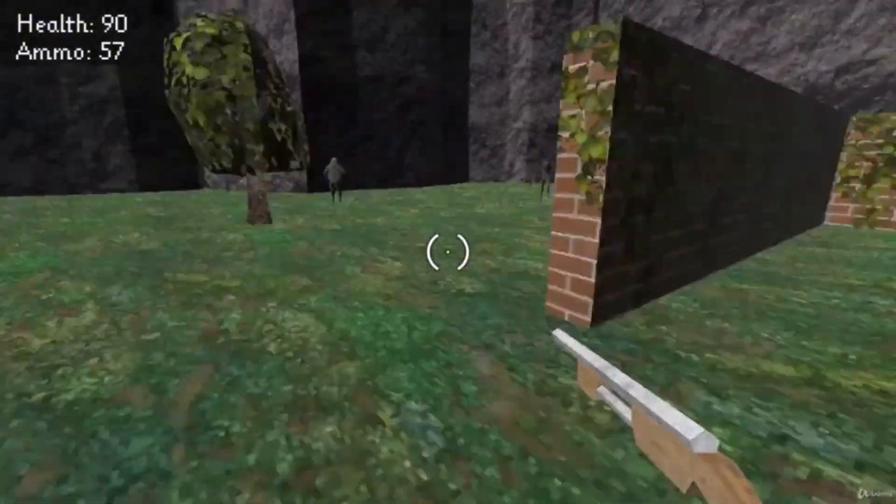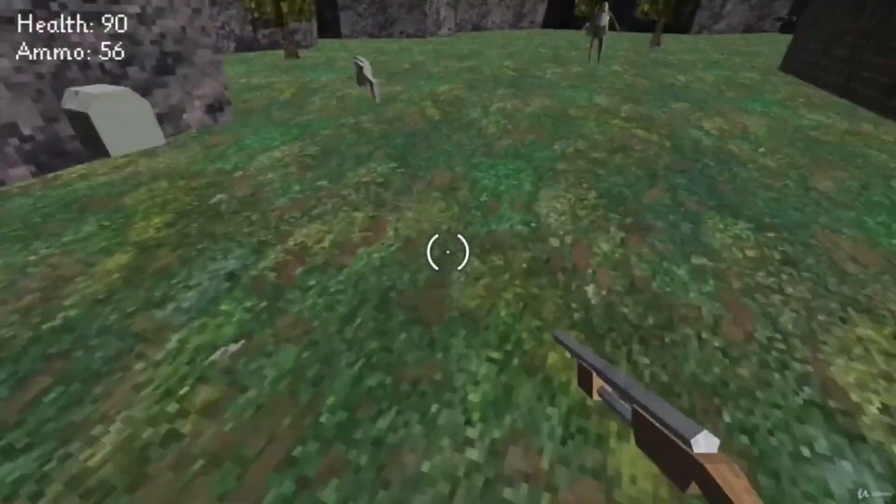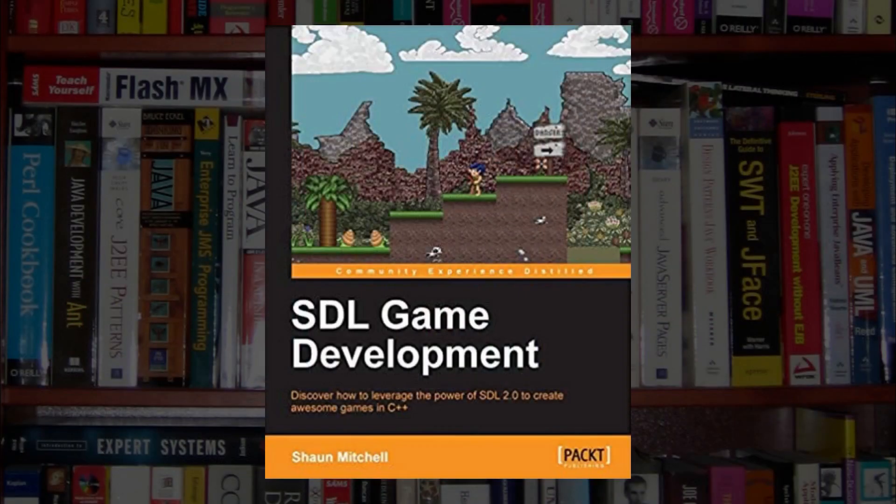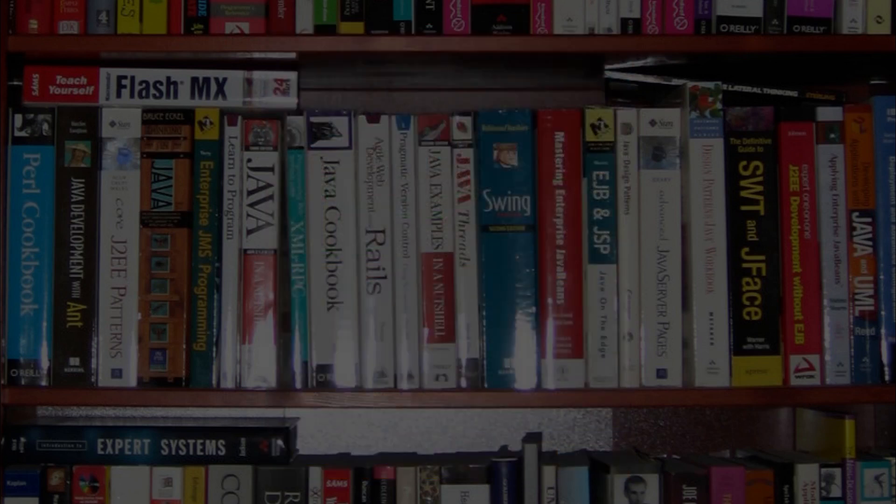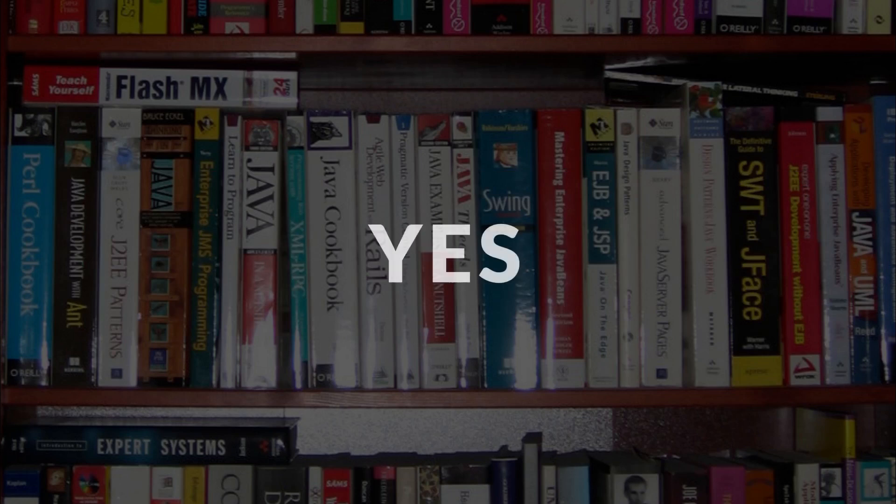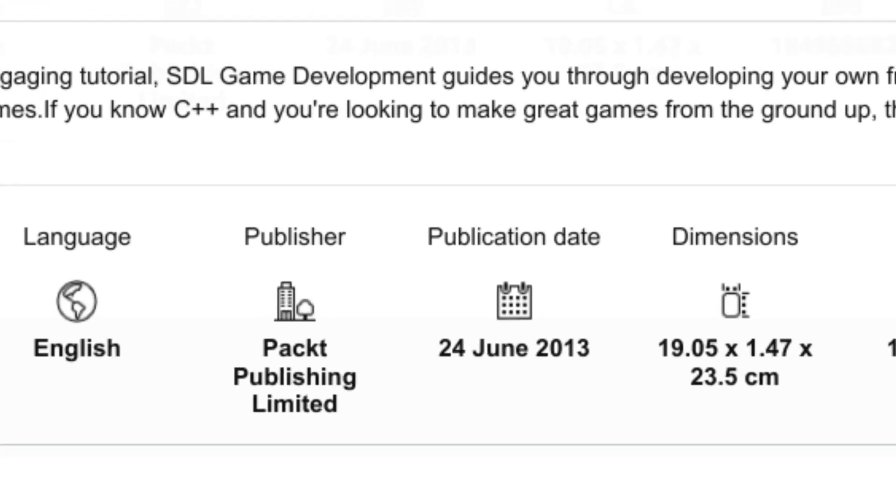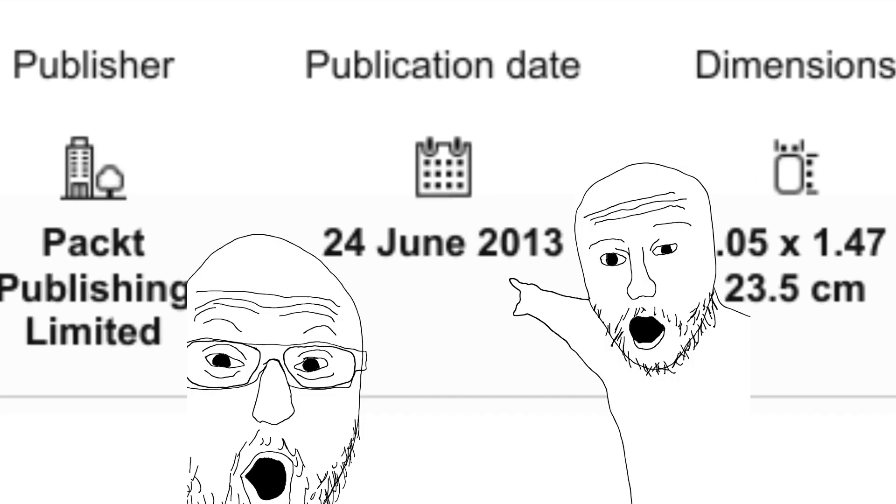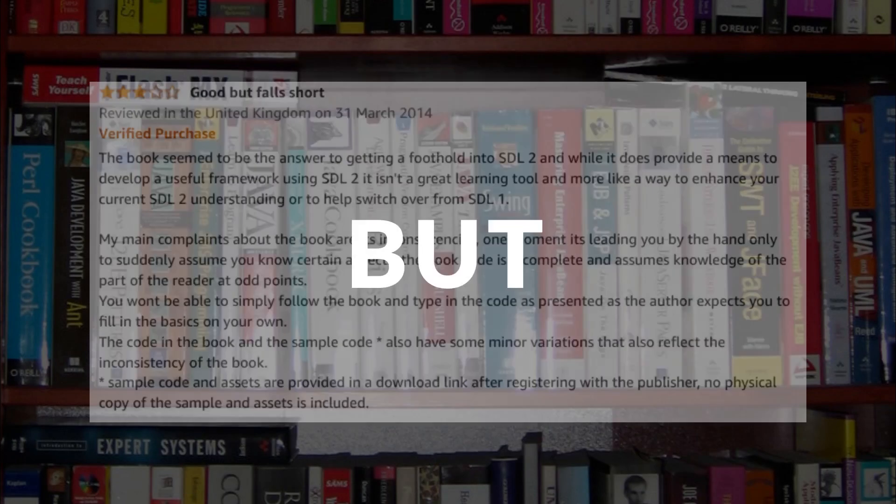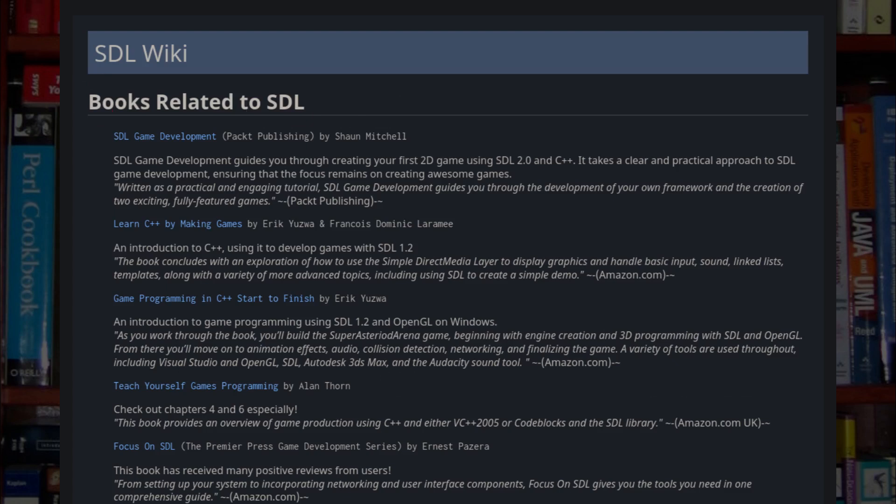Around the same time, I also wanted to delve deeper into C++, so I decided to do both and picked up SDL game development by Sean Mitchell. It was during this time that I also created the video on setting up Clang D in NeoVim. Yes, it is an old book by software lifetime standards as it was published in 2013 and also has a lot of typos and mistakes, but it was the only book I could find on SDL2.